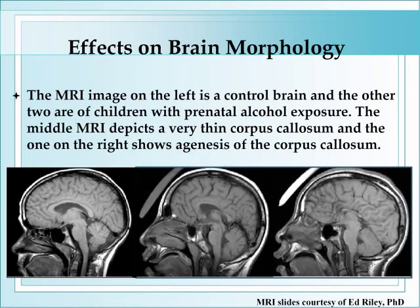In this series of MRI images, we can make comparisons between the corpus callosum in exposed and unexposed individuals. In the image on the left, there is a nice white arc of normal appearing corpus callosum tissue. In the middle image, we see disruption of the corpus callosum with an incomplete formation of that structure. And in the image on the right, there is very little developed corpus callosum tissue visible. The other finding to note is that the size of the cranium relative to the face is much smaller in the images from exposed individuals than in the unexposed individual on the left, a result of the overall reduction in brain volume.